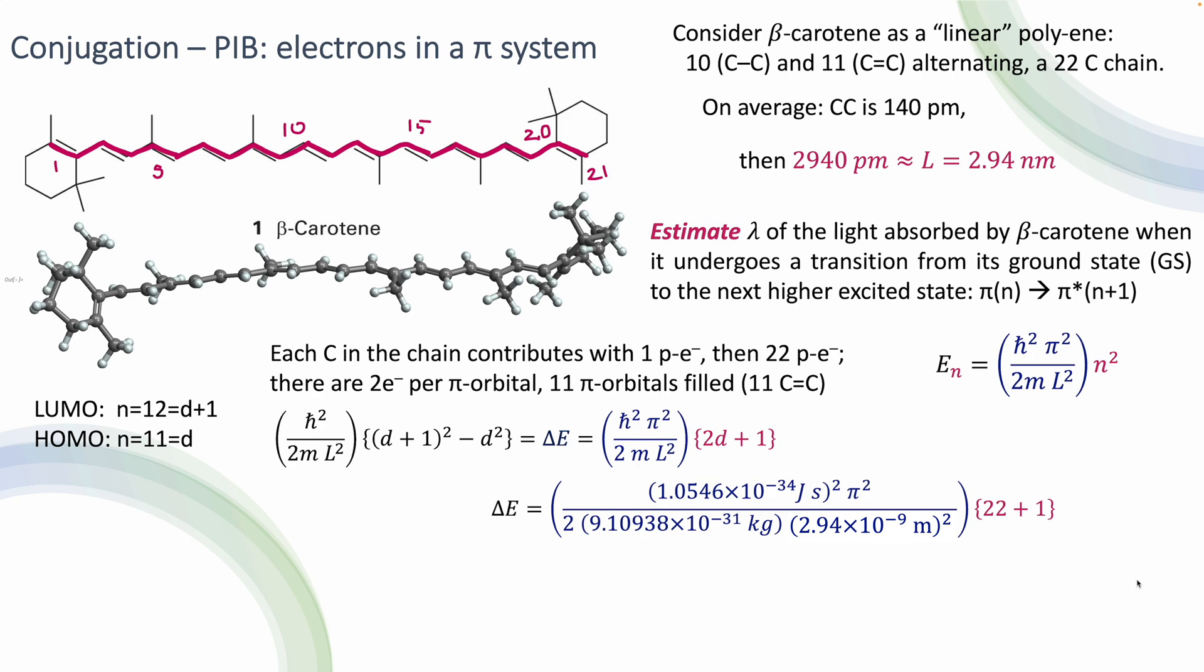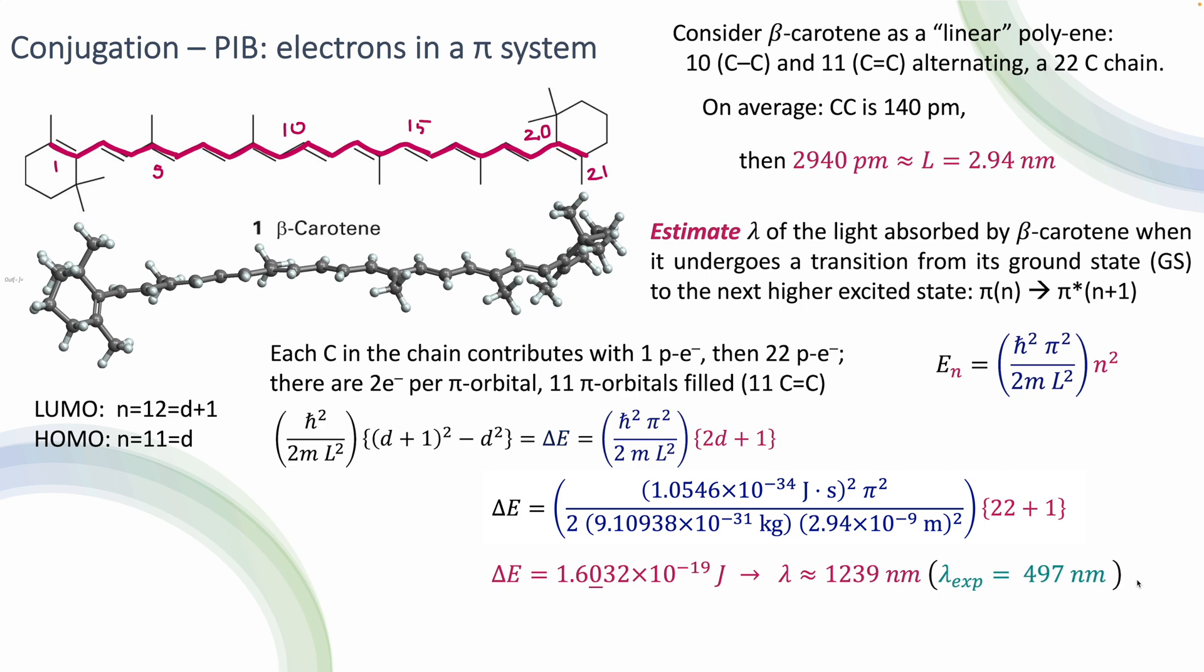2 times 11 is 22 plus 1 is 23. We do all the multiplications that we need to do, and then we end up calculating that the change in energy is going to be roughly 1.6 × 10^-19 joules, and also make sure that you do the unit analysis and convince yourself that all the units that I have here cancel and give you finally joules, since that's what it should be in terms of the energy, but convince yourselves, okay? And that energy, according to the formulation that we had before, is going to correspond to a wavelength of about 1,200 nanometers.